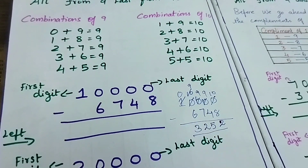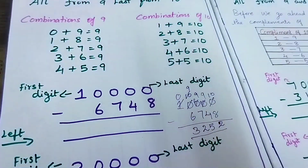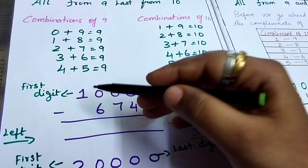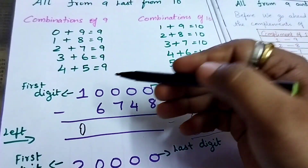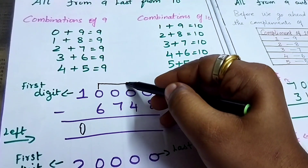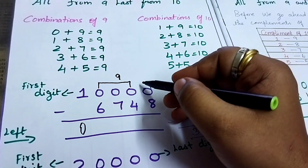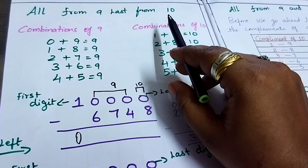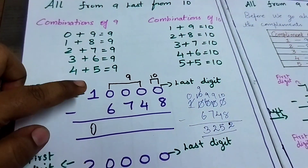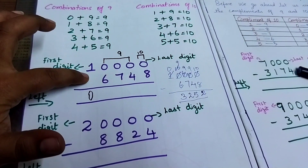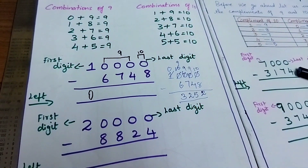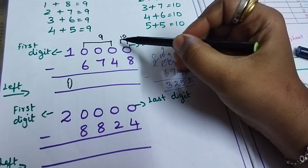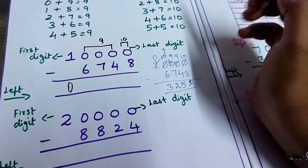First digit: whatever is the first digit, you should do the predecessor of that. What is the predecessor of 1? Predecessor means the number before 1 - it is 0. Write that here. Then all the remaining numbers you have to subtract with 9, and the last number with 10. That is the concept - all from 9, last from 10. The first step: whatever is there in the first digit, you should write the number before it. The remaining numbers you subtract with 9 and the last number with 10.